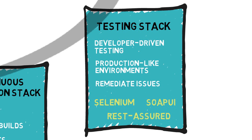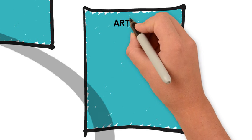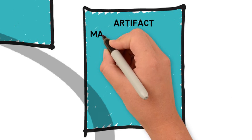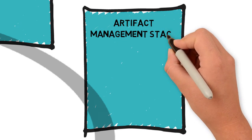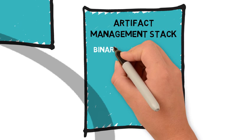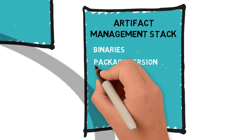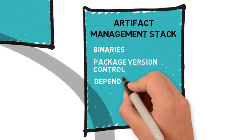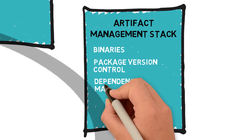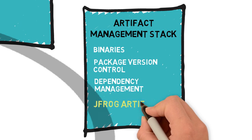The artifact management stack supports the management of application artifacts, including binaries, and provides package version control and dependency management of the artifacts. Tools for artifact management include JFrog, Artifactory, and vRealize CodeStream.